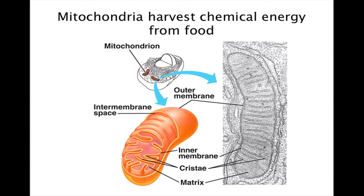Mitochondria are organelles that carry out cellular respiration in nearly all eukaryotic cells, converting the chemical energy of foods into a different type of chemical energy called ATP. ATP is the main energy source for cellular work. Mitochondria are enclosed by two membranes with two internal compartments: the intermembrane space — the narrow region between the inner and outer membrane — and the mitochondrial matrix, which contains mitochondrial DNA and ribosomes, as well as many enzymes that catalyze reactions of cellular respiration. The inner membrane is highly folded; the folds, called cristae, increase the membrane's surface area, enhancing the mitochondria's ability to produce ATP.